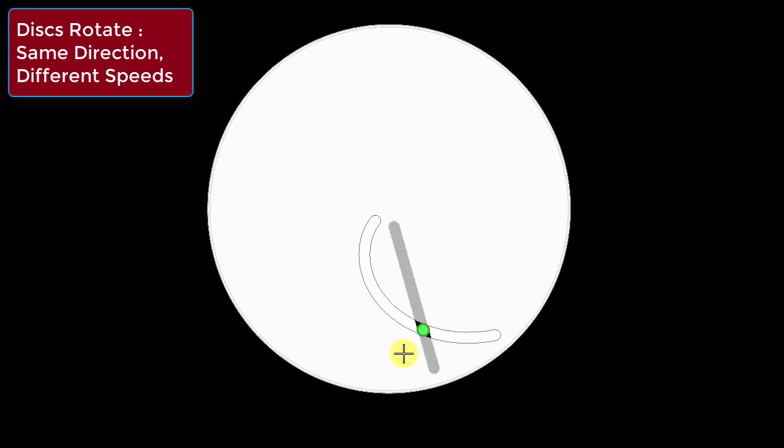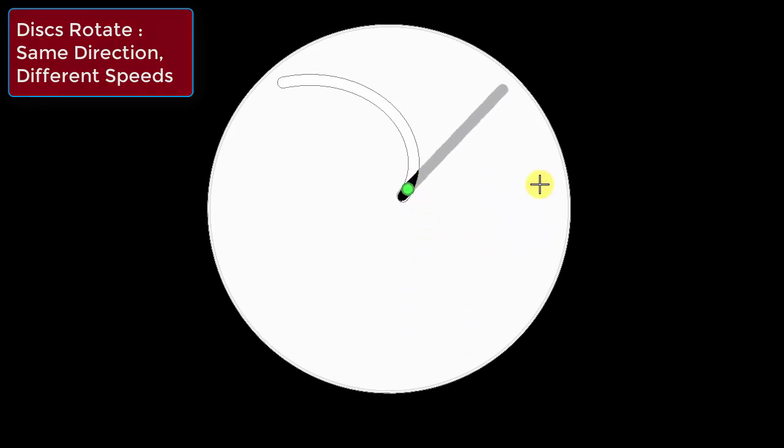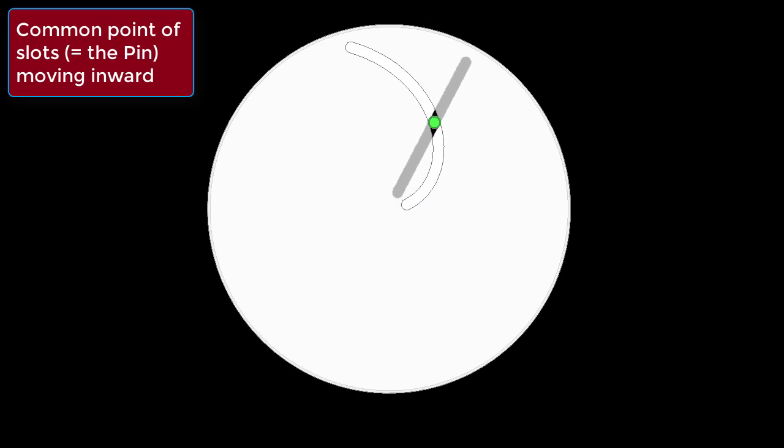Over here the radial slot is rotating the disc with a radial slot and the top disc is also rotating. It is rotating a little faster. So, this curved slot is kind of overtaking the radial slot and thereby their point of intersection is shifting towards the center.